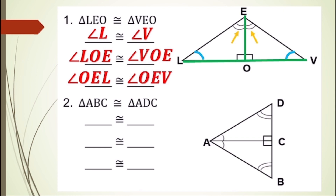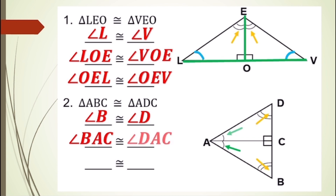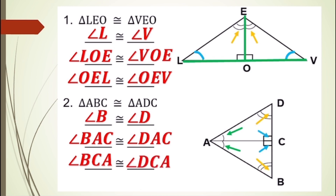For number two, we have triangle ABC is congruent to triangle ADC. Our first pair of congruent angles is angle B is congruent to angle D. For our second pair of congruent angles, we have angle BAC is congruent to angle DAC. And for our last pair of congruent angles, we have angle BCA, which is a right angle, is congruent to angle DCA, which is also a right angle.